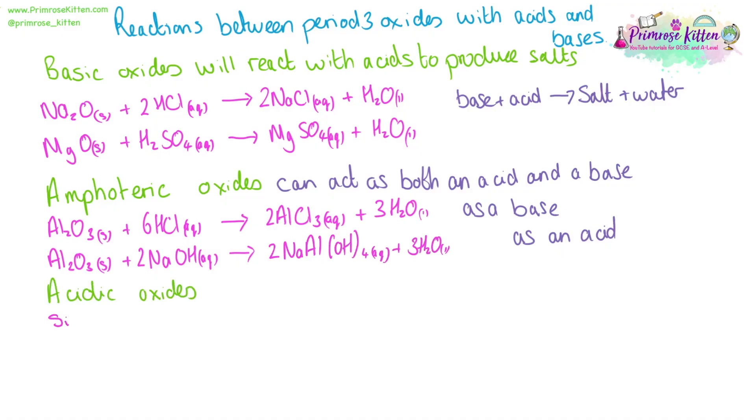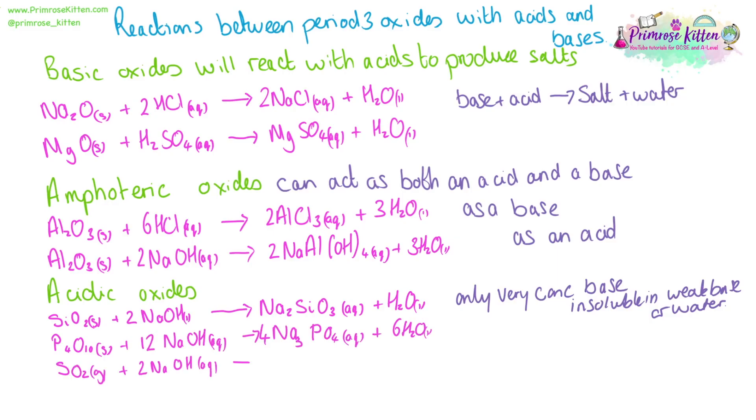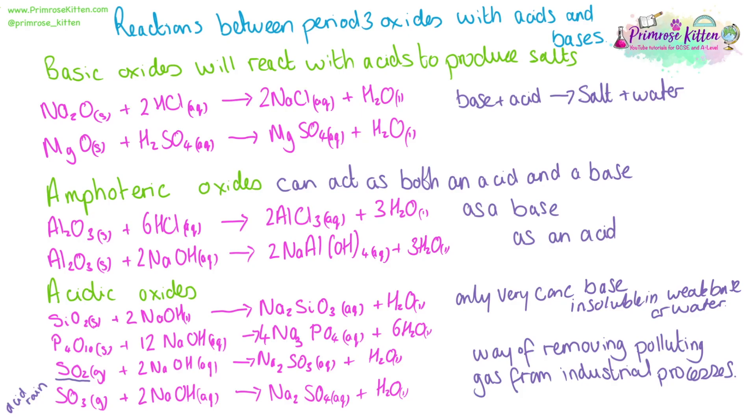The rest of period three form acidic oxides. Silicon oxide will react with very concentrated sodium hydroxide, and only very concentrated as it is insoluble in a weak base or in water. The rest will act as acids as follows. Sulfur dioxide when released into the environment is a polluting gas that can cause acid rain. This reaction is one way of removing polluting gases from industrial waste.